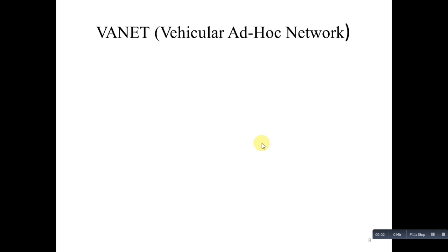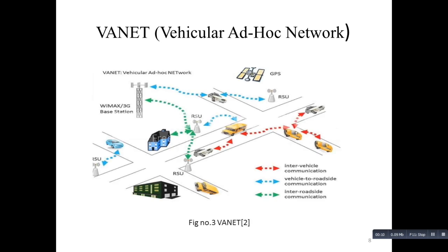The next application is VANET. VANET is a network which is formed among different vehicles on a road and can propagate information like accidents and congestion. Because of MANET, there is a possibility of communication on road which includes inter-vehicular communication, vehicle-to-vehicle communication, and road-side communication.